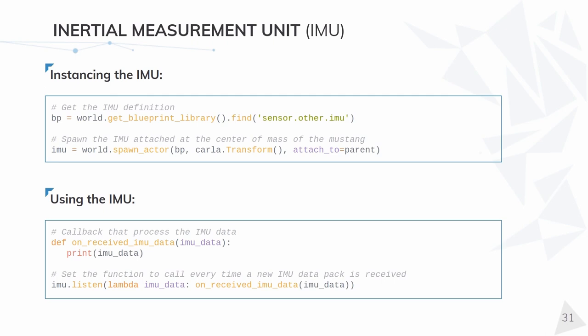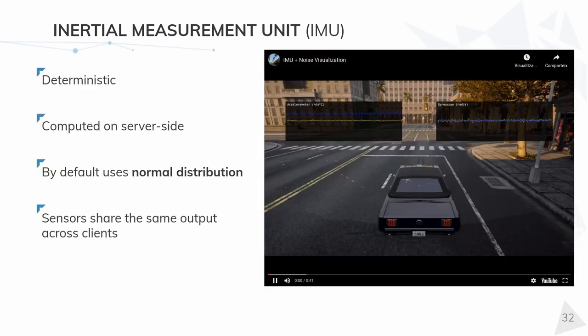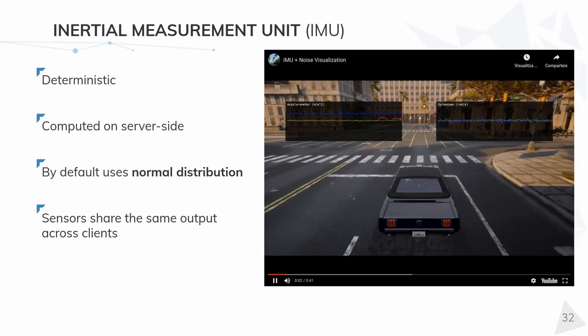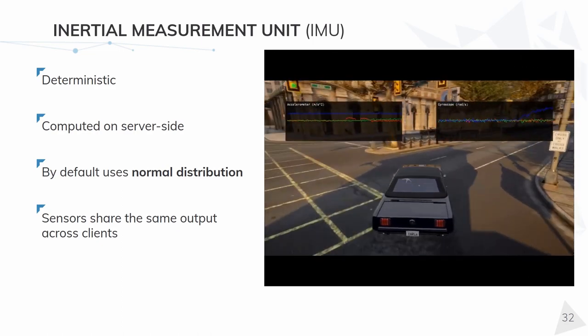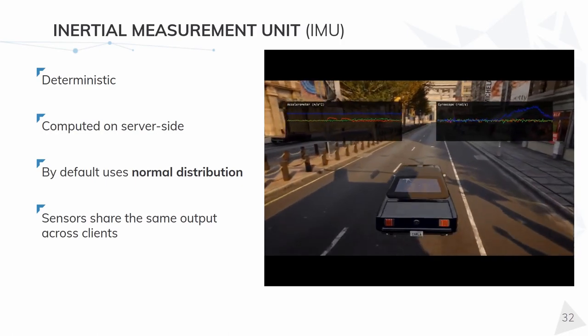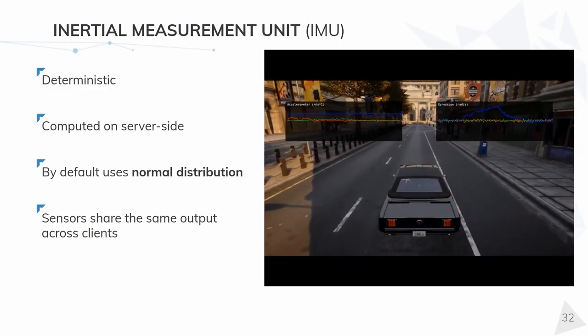Also, you can see the peaks in the accelerometer when I collide with something. Instancing and using it is basically the same as we made before with the RGB sensor, but in this case we will search for sensor.other.imu, and everything else stays the same except for the IMU data, obviously. The IMU, alongside with the GNSS, takes advantage of the new generic noise system we implemented on the server side, which can be used for all sensors in case it makes sense for them to have it.